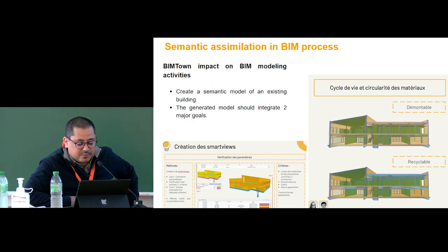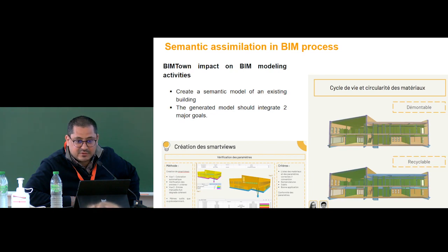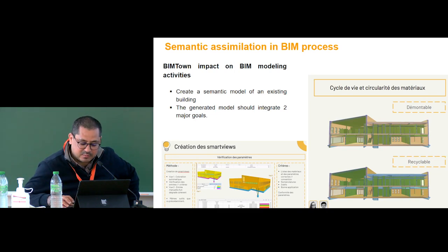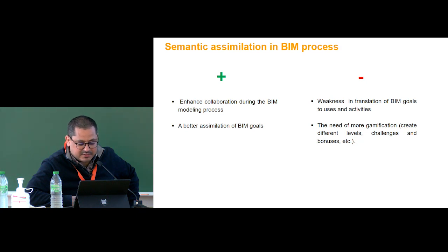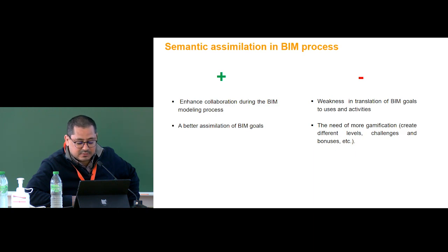After the experience, we ask students to create a semantic model of an existing building following what we call a flattened BIM process. This BIM process integrates two major goals that students reach only if they assimilate semantic modeling skills. As positive outcomes, we have enhanced collaboration during the BIM modeling process and a better simulation of BIM goals. As negative outcomes, we identified weakness in translating BIM goals to uses and activities, and a need for more gamification — such as creating different levels, challenges, or bonuses for students.